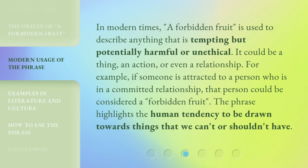In modern times, 'a forbidden fruit' is used to describe anything that is tempting but potentially harmful or unethical. It could be a thing, an action, or even a relationship. For example, if someone is attracted to a person who is in a committed relationship, that person could be considered a forbidden fruit. The phrase highlights the human tendency to be drawn towards things that we can't or shouldn't have.